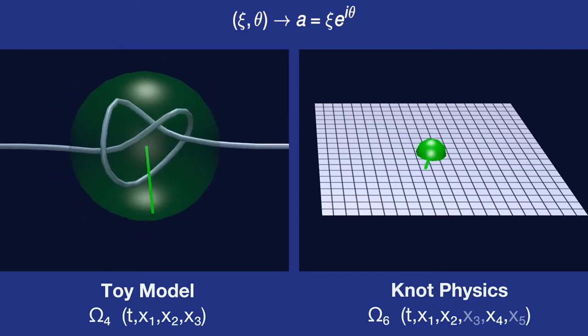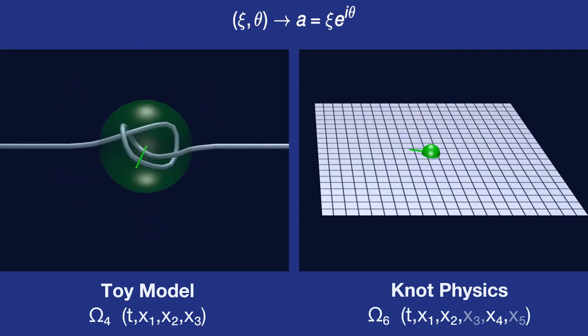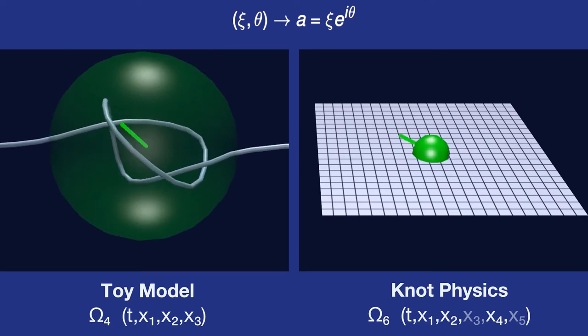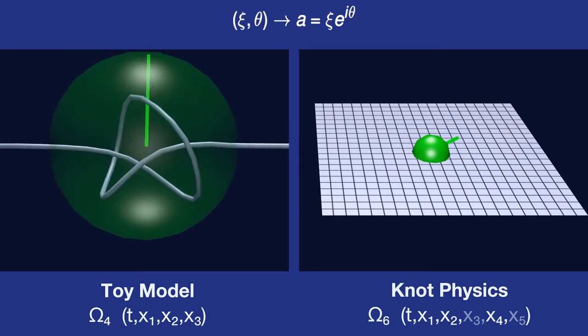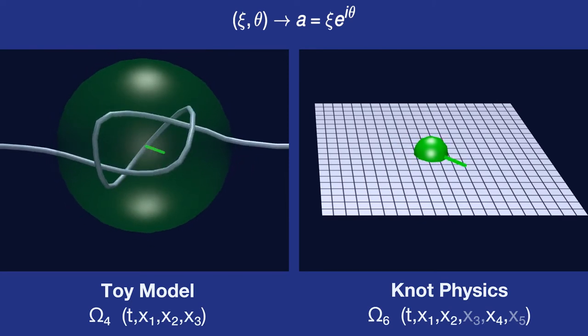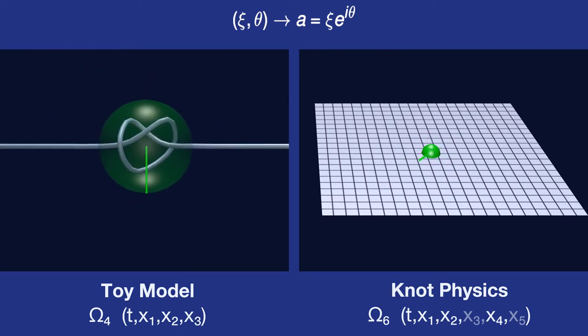We can describe that vector in polar coordinates with a radius, c, and an angle, theta. Equivalently, we can describe the same vector using a complex number. We refer to that complex number as the knot's amplitude, a, and set a equal to c e to the i theta.